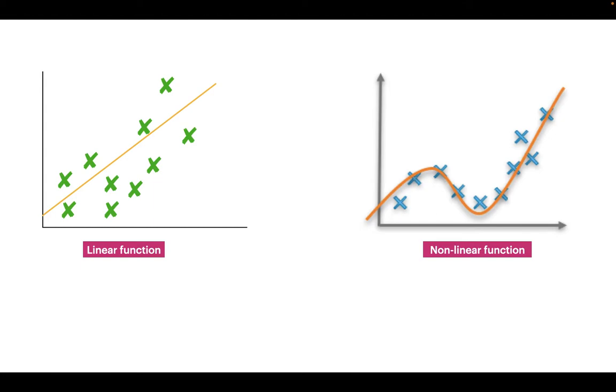To achieve non-linearity, we have to use activation functions in the neural network because this is very important. Sometimes when you're training a neural network, let me show you practically with my code snippet.